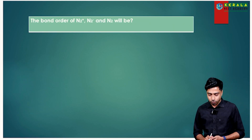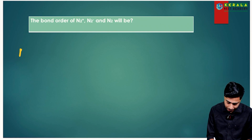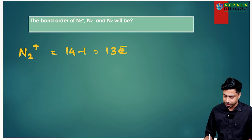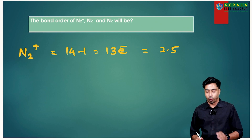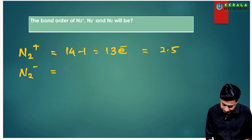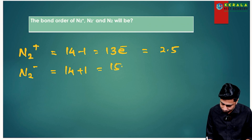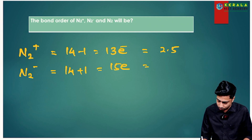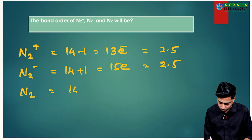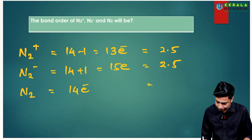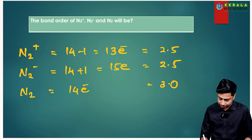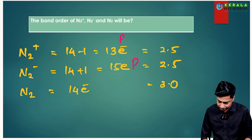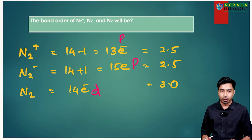Now calculate bond order of N2⁺, N2⁻, and N2. N2⁺ has 14−1 = 13 electrons, so bond order = 2.5. N2⁻ has 14+1 = 15 electrons, so bond order = 2.5. N2 has 14 electrons, bond order = 3. For magnetic behavior: 13 electrons (N2⁺) is paramagnetic; 15 electrons (N2⁻) is paramagnetic; and N2 with 14 electrons is diamagnetic.